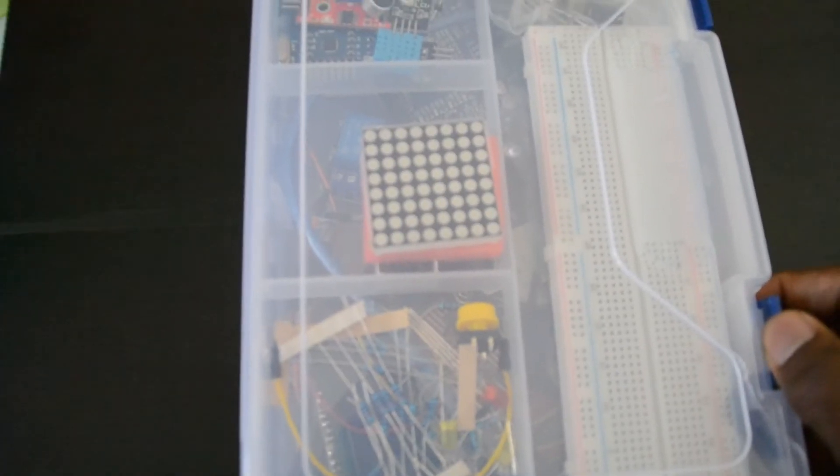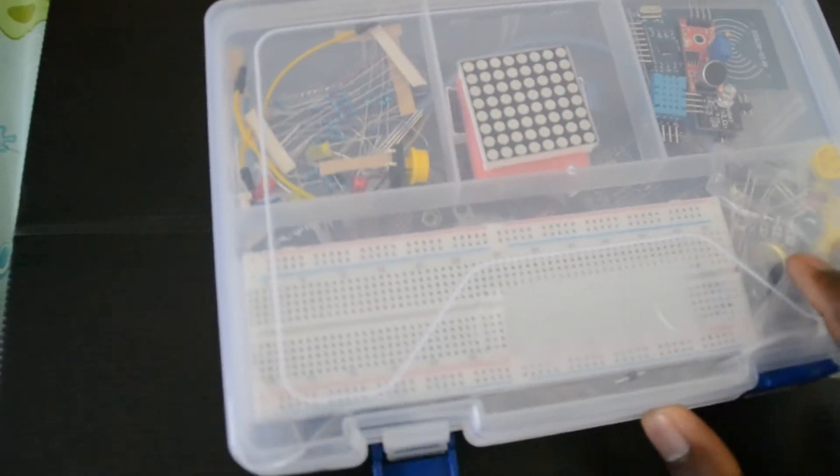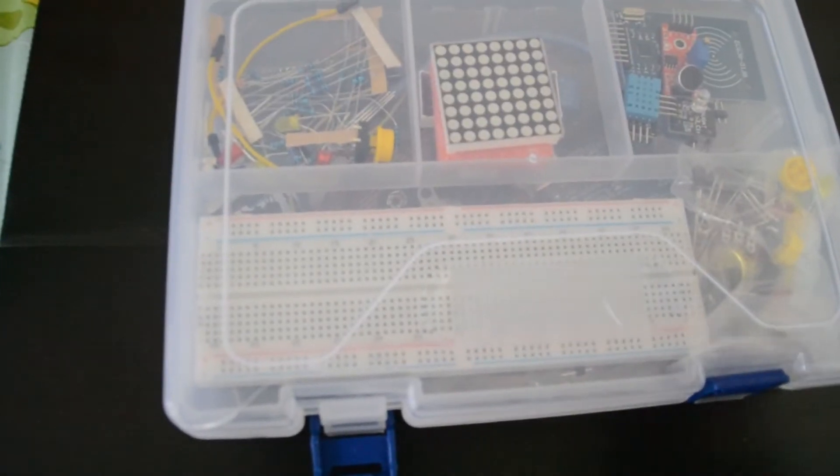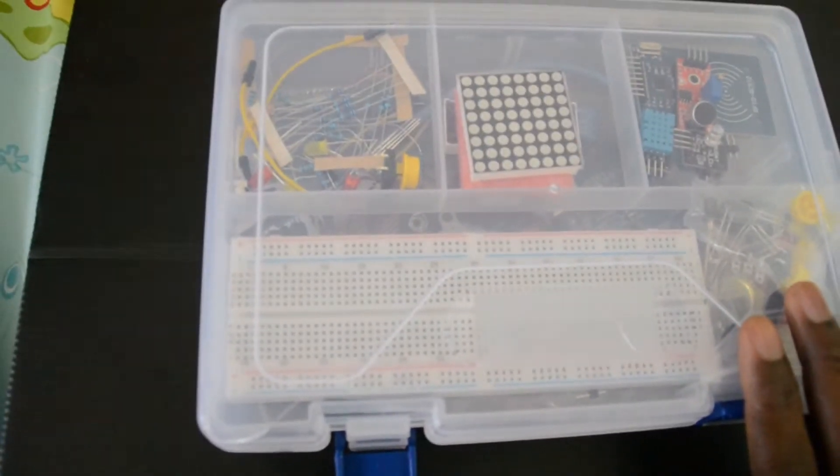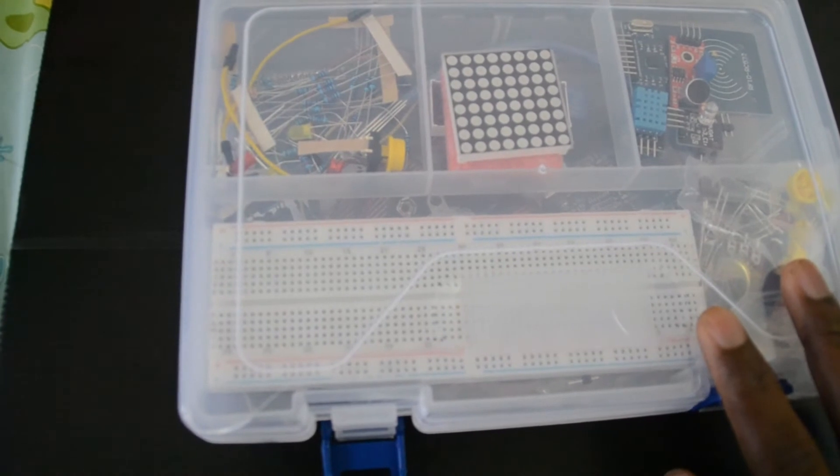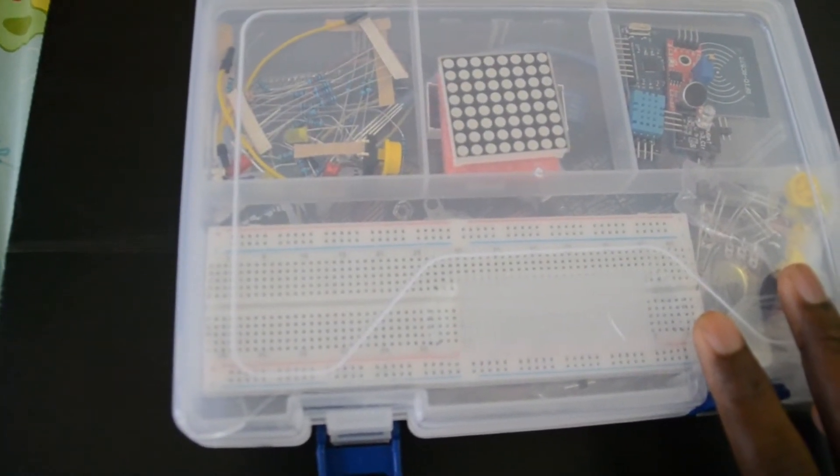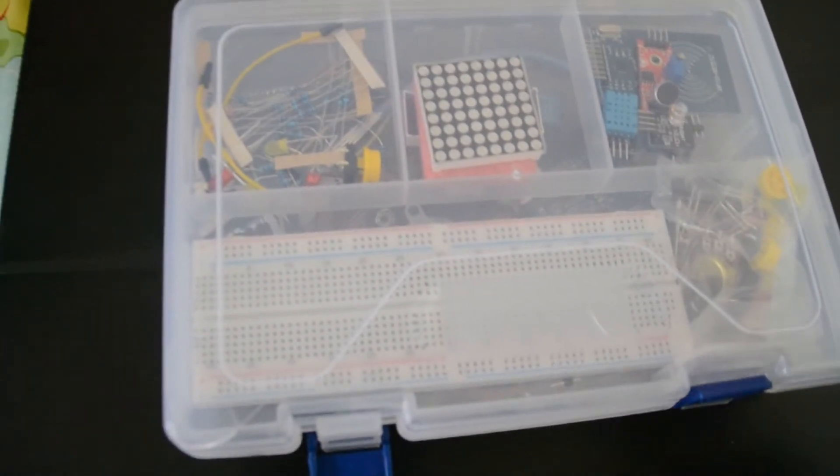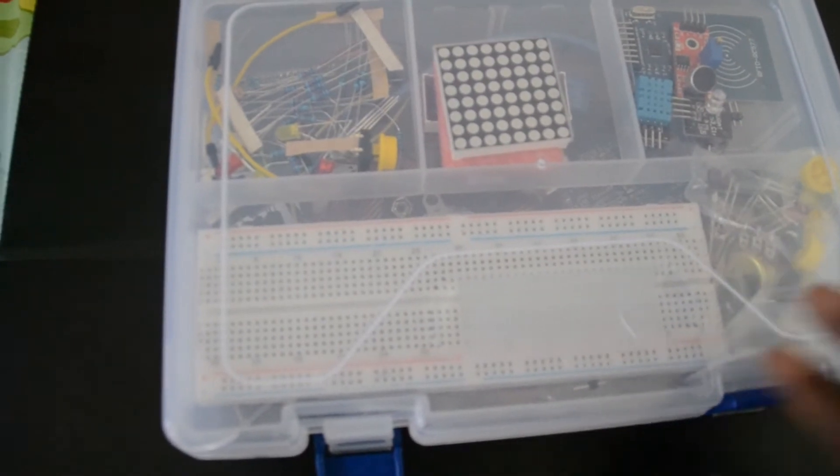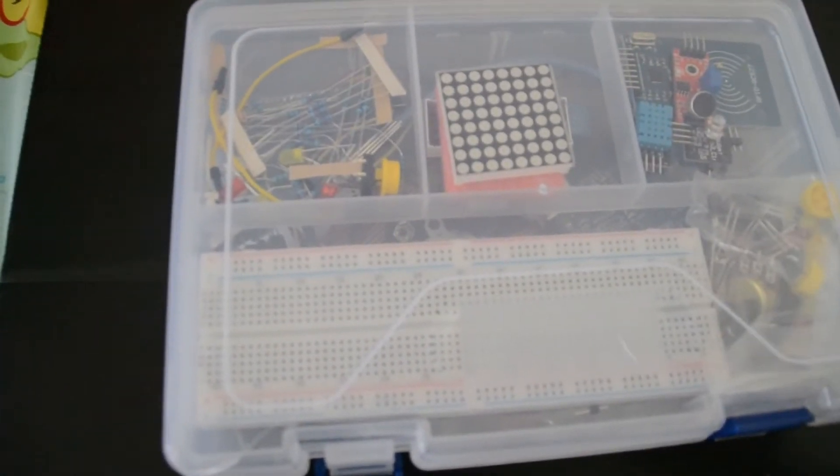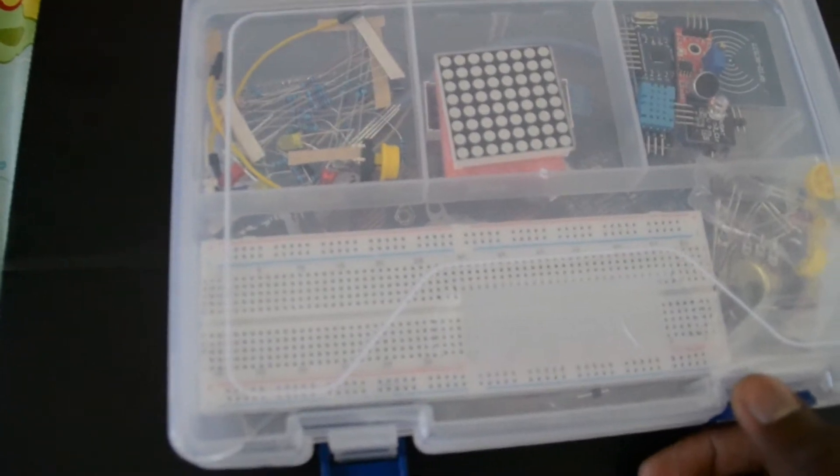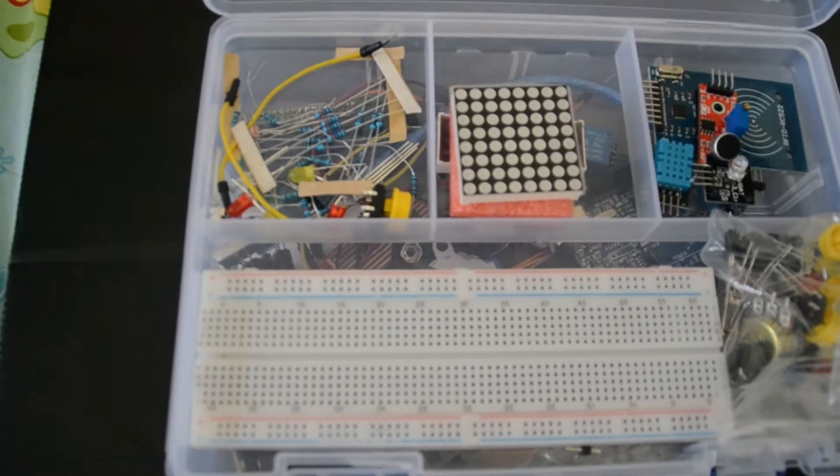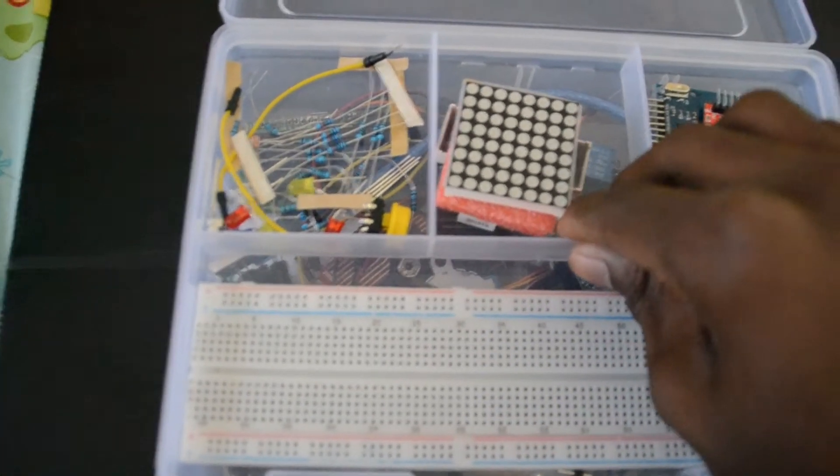Hello guys, so here I have an Arduino kit, Arduino Uno kit from Aliexpress. This one cost me $21. It's already opened because I was testing everything during the time. It comes in two parts.